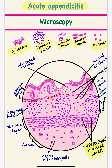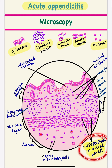Next is the layer of muscularis mucosa, which is a thin layer of smooth muscle cells. After that is the submucosa, which in the appendix contains lymphoid follicles. These lymphoid follicles are composed of lymphoid cells in various stages, and they generally become hyperplastic in appendicitis.